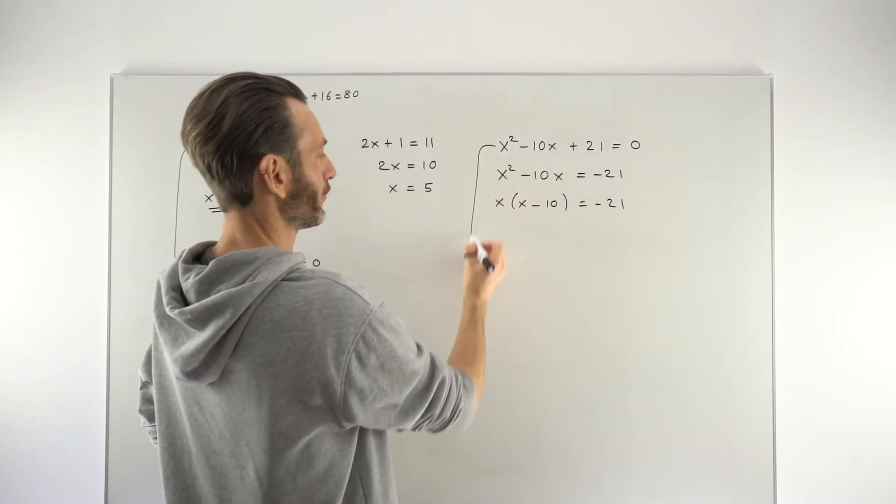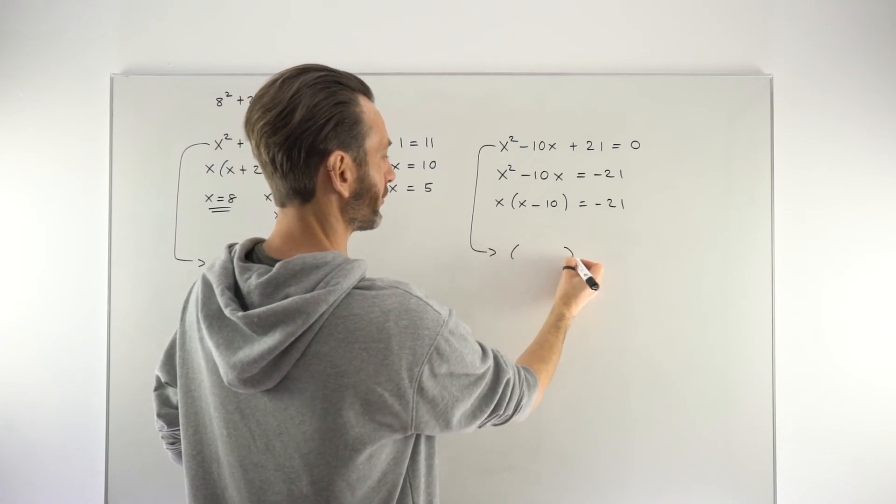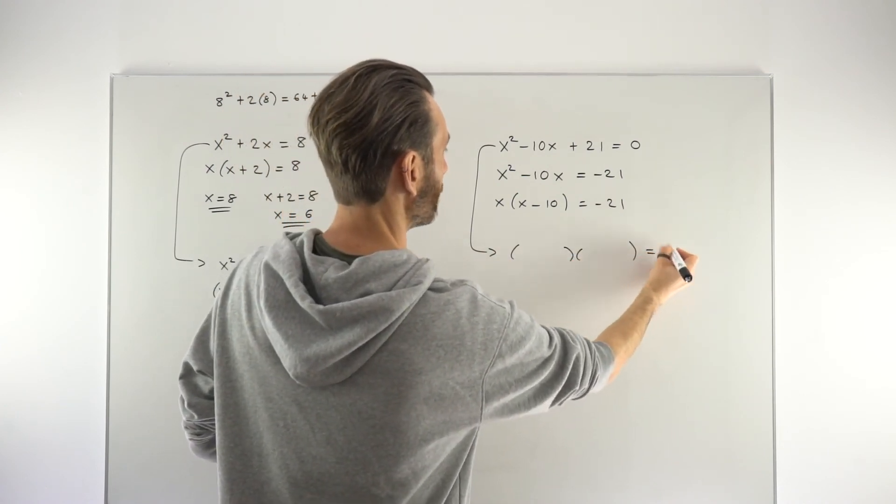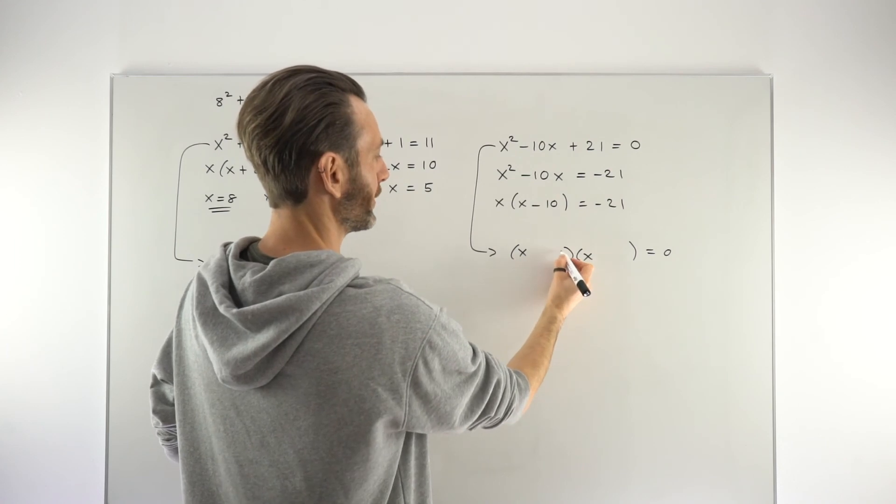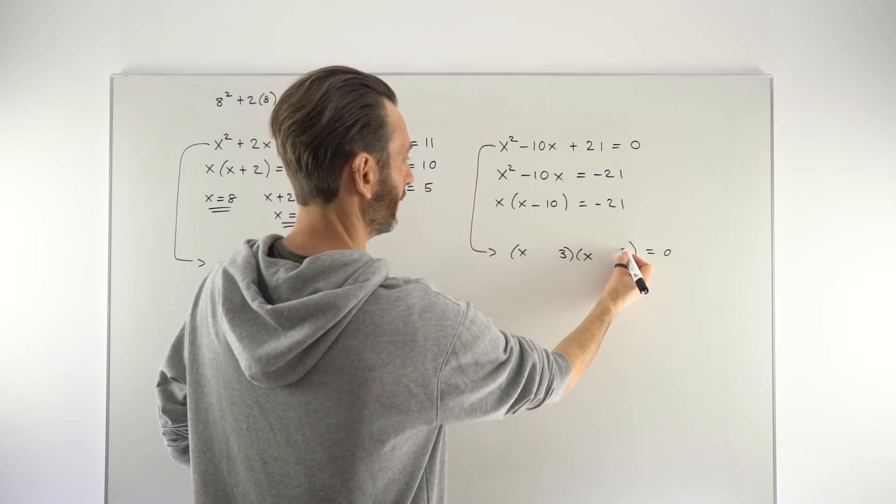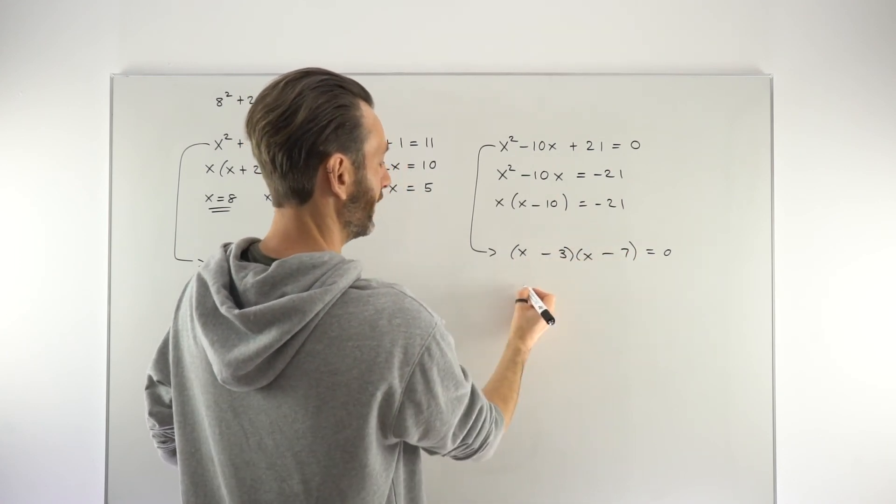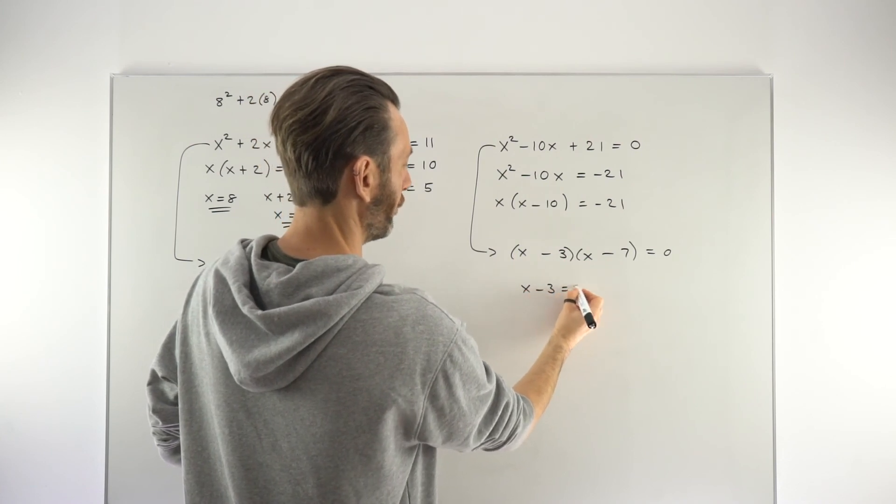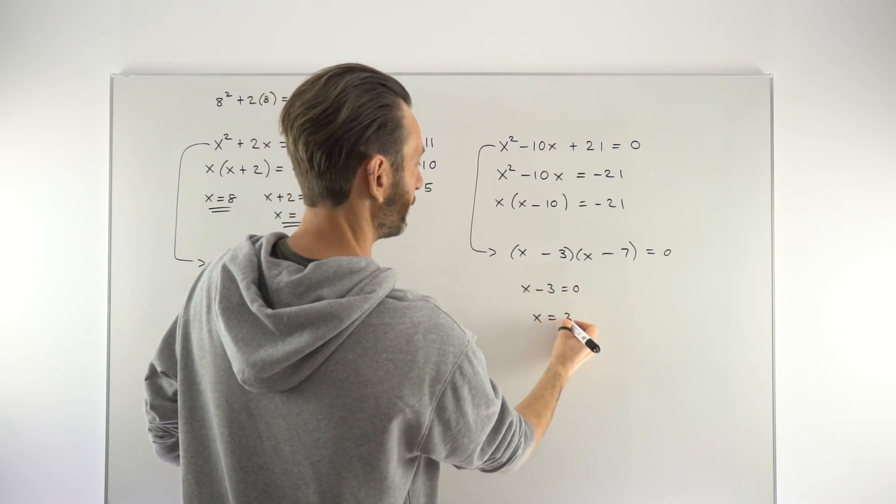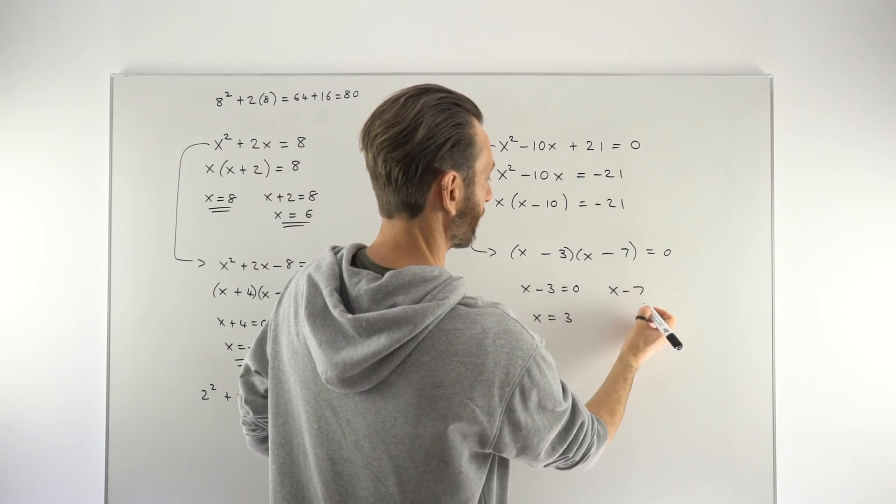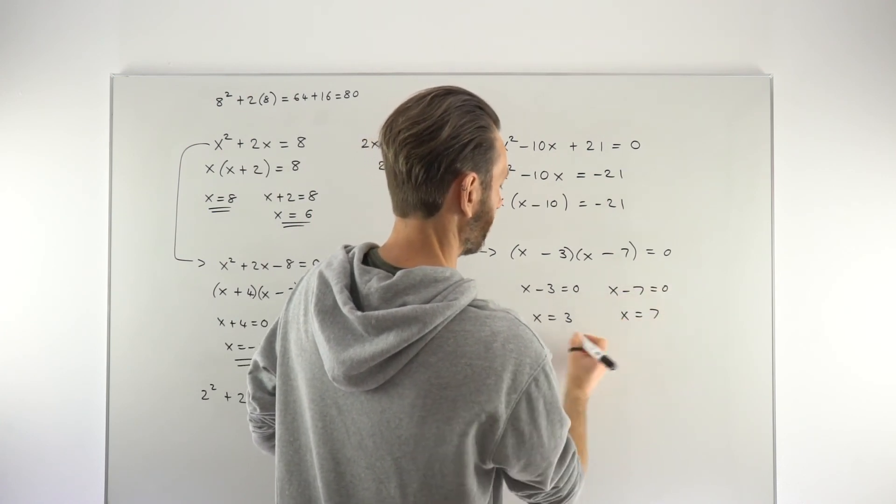What they should have done was just from this first line go straight to factorizing because the equation was already set equal to 0. This would factorize with a 3 and a 7 and two negatives and these would eventually give solutions of x equals 3 for the first factor and then for the x minus 7 factor a solution of x equals 7.